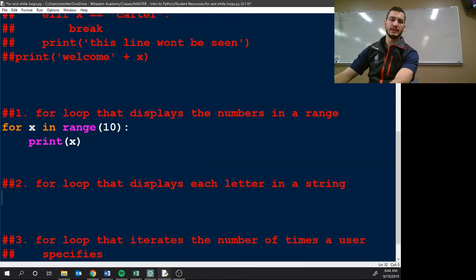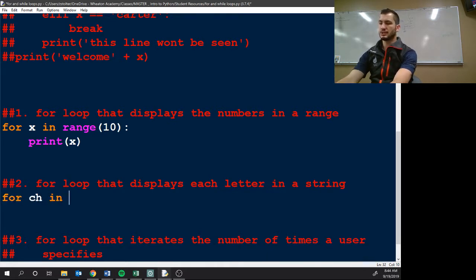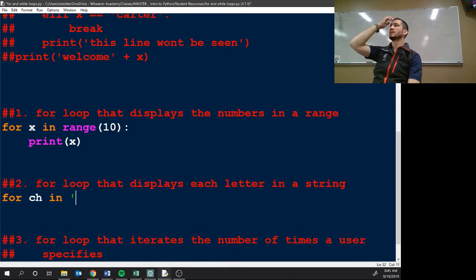Displays each letter in a string. For ch in. Now who knows why I picked ch? Character, yep. Once you get into more complex for loops, especially in our video game, we do a lot of for loops. If everything is x and y, you get really confused really quickly.